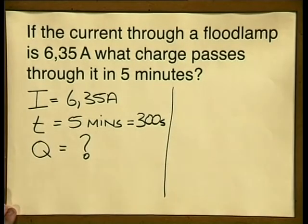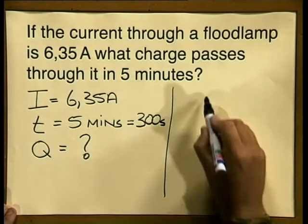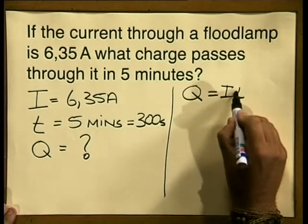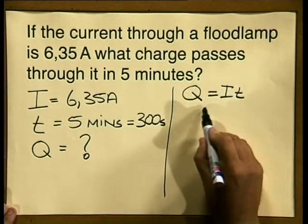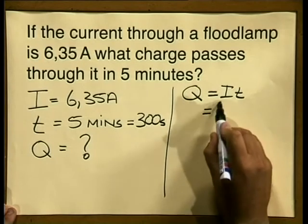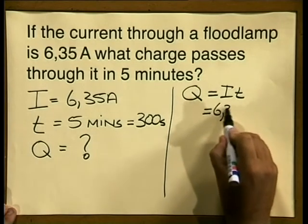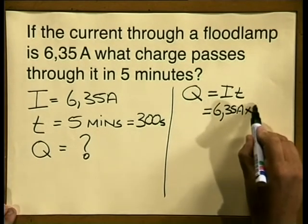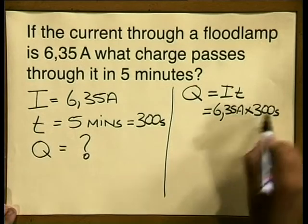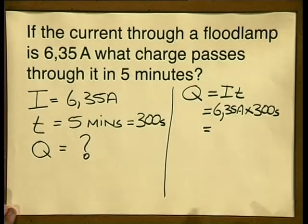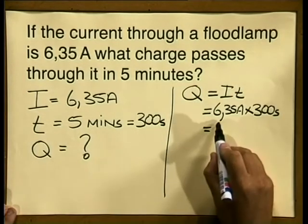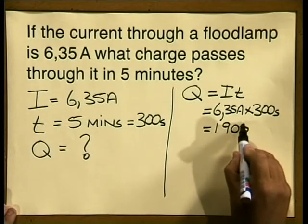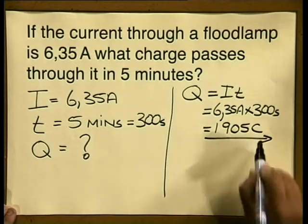Now let's do the calculation. We write down our formula, q is equal to i times t. We substitute into the formula: 6.35 amperes multiplied by 300 seconds, giving an answer of 1905 coulombs.